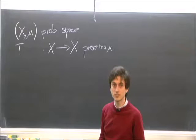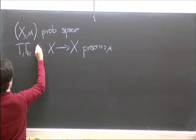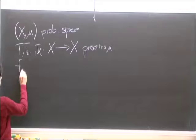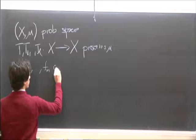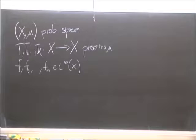The whole point of non-conventional ergodic averages is that instead of taking just one transformation, we will usually take many of them at the same time. And I will always take all the functions to be bounded, just because this is the only way to make sense in the general case—just to assume our functions are bounded.